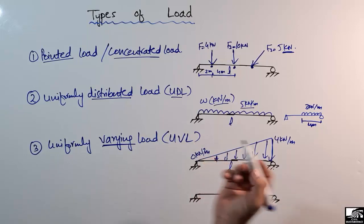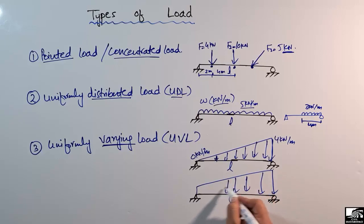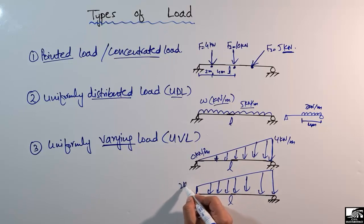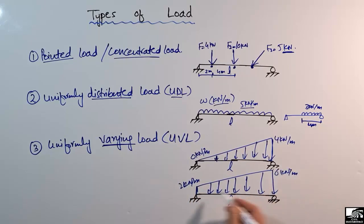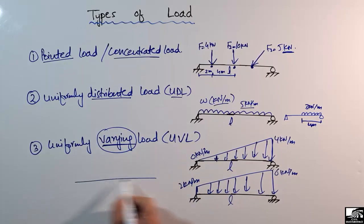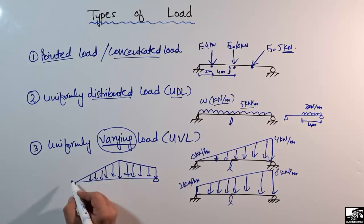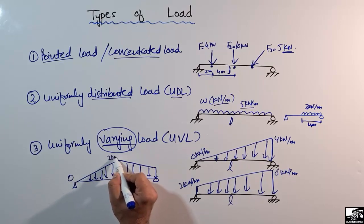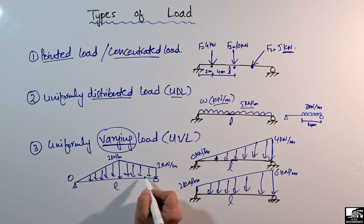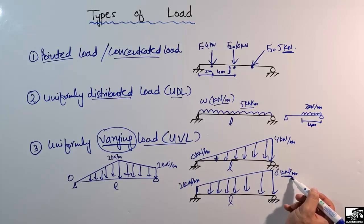Another example is a trapezoidal load, where the load also changes in magnitude — for example from 2 kilonewton per meter at one point to 6 kilonewton per meter at another. A beam may also have a combination of triangular and trapezoidal loads, where the value changes over the length — for instance from 0, to a maximum of 2, then to 1 kilonewton per meter. Whenever the load changes over the length of the beam, we call it a uniformly varying load, and it is always represented in kilonewton per meter.